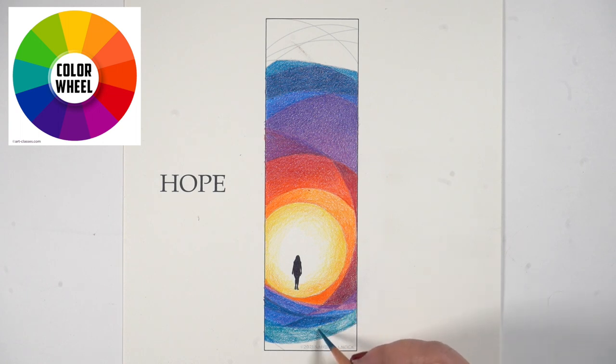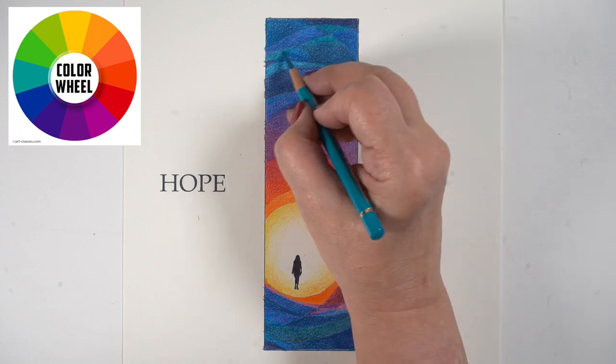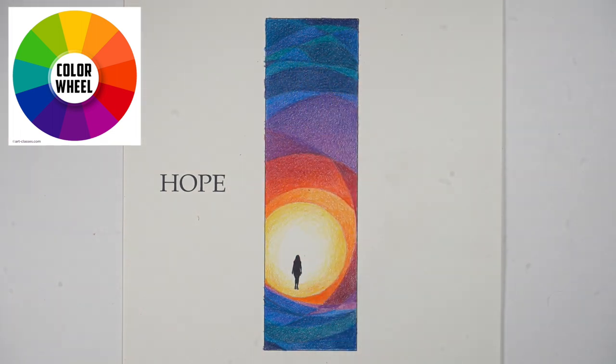And as I started getting further into those outer edges, I wanted them to get darker. So I started using a navy blue to just darken each one of those colors and to bring them together so that they were separate sections of color, but they blend really nicely together and they don't feel like they're all separate chunks of color.